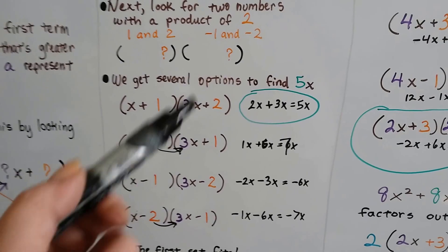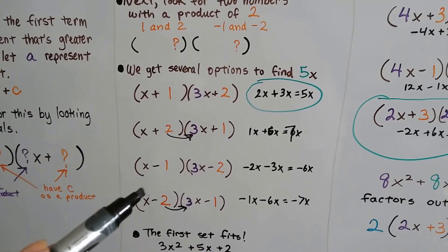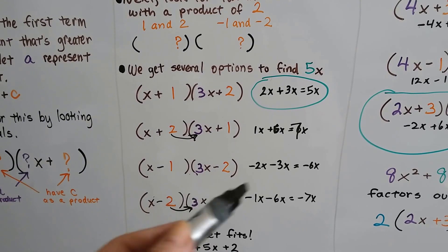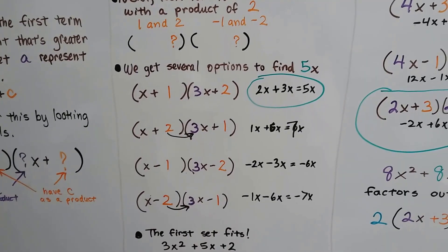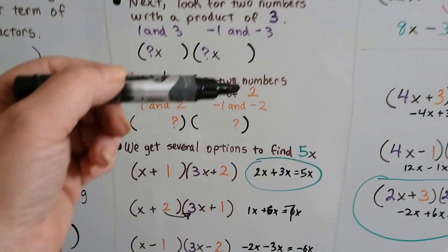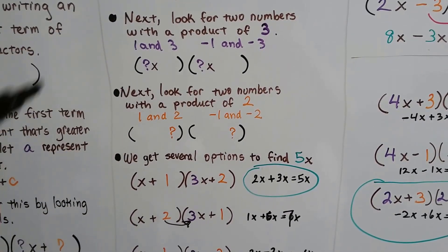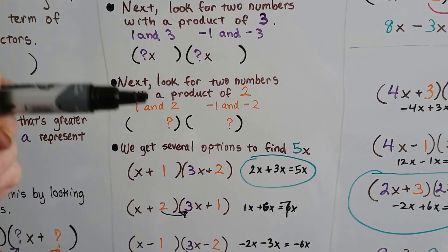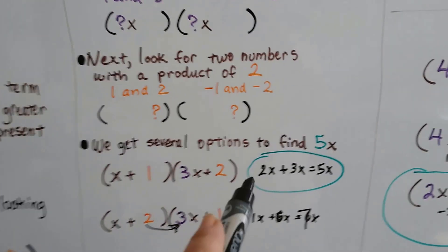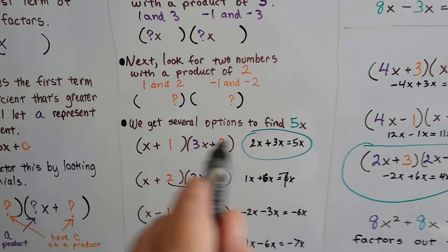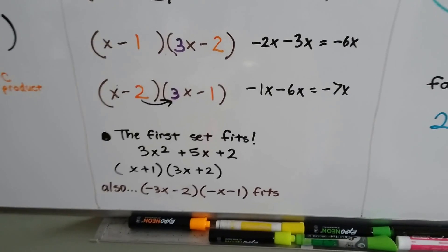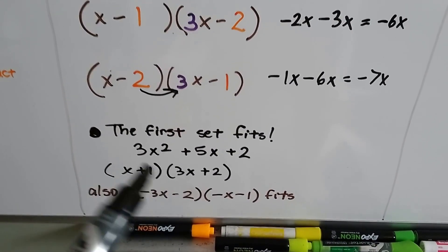If we try negative 1 and negative 2 with positive 1 and 3, we get negative 2 times negative 3 — that doesn't work either. We saw that the first combination worked. The answer is (x + 1)(3x + 2). Let's verify: it gives us 3x squared plus 5x plus 2, and those are our binomial factors.